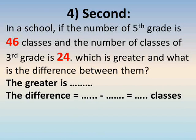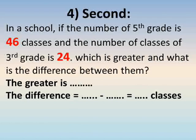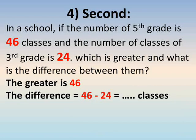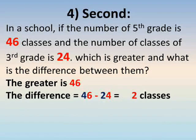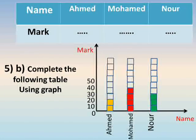In a school, the number of fifth grade classes is 46 and the number of third grade classes is 24. Which is greater — 46 or 24? The fifth grade is greater with 46. The difference between them: 46 minus 24 — six minus four equals two, four minus two equals two — the difference is twenty-two classes.